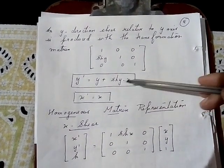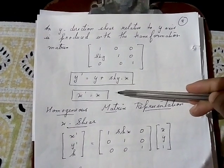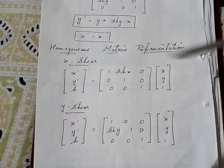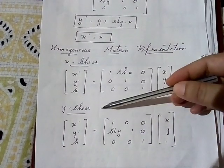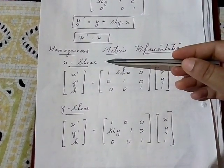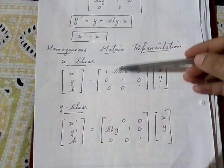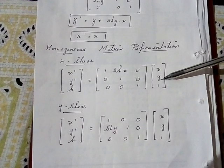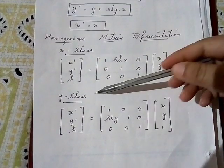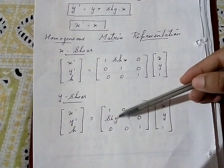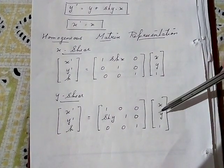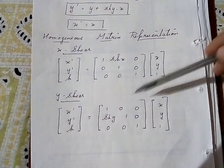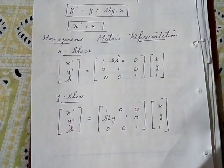When performing y-shear, x-dash will be x only — changes happen in y but x value remains the same. The homogeneous matrix representation for x-shear uses shx, causing change only in x not in y. Similarly, for y-shear the matrix uses sh_y, with no change in x.